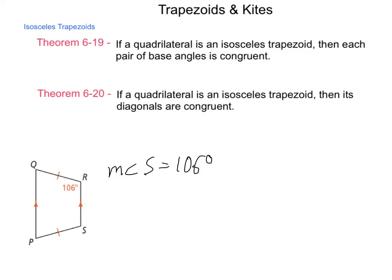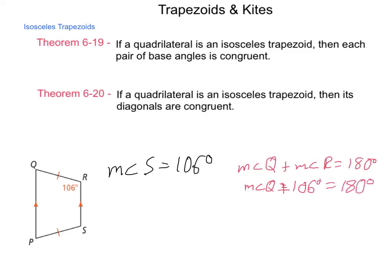We can find the measure of angle P and angle Q using the fact that the interior angle sum is 360 degrees, and since we have a set of parallel lines, the isosceles sides act as transversals — same-side interior angles have to be supplementary. So the measure of angle Q plus the measure of angle R equals 180 degrees. Using substitution, angle Q plus 106 degrees equals 180 degrees. By the subtraction property of equality, the measure of angle Q is 74 degrees.